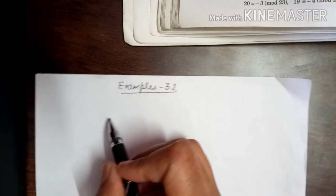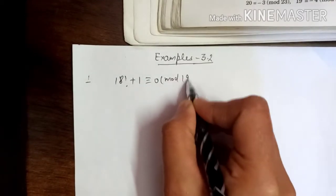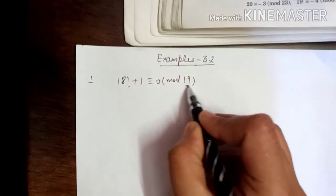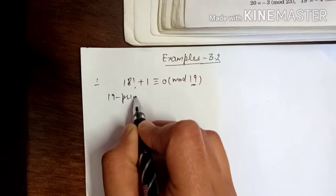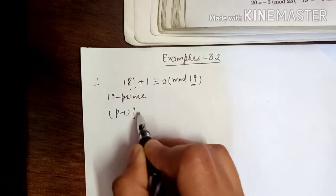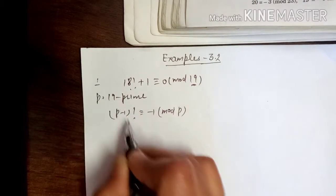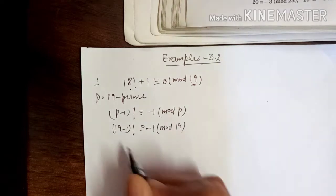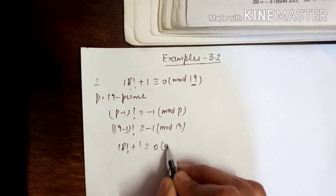We will start the examples of Wilson's theorem. First example: using Wilson's theorem we have to prove that 18! + 1 is congruent to 0 mod 19. Since 19 is a prime number, by Wilson's theorem for prime p: (p-1)! ≡ -1 (mod p). Here p = 19, so 18! ≡ -1 (mod 19), which means 18! + 1 ≡ 0 (mod 19).